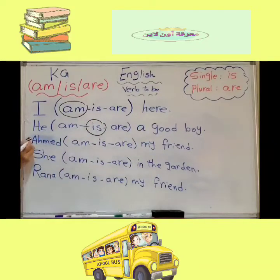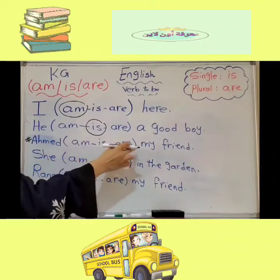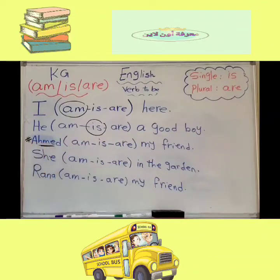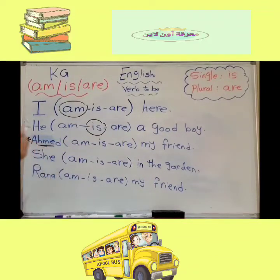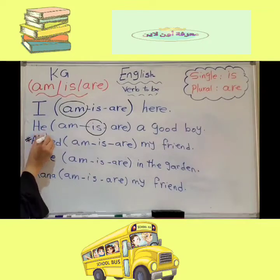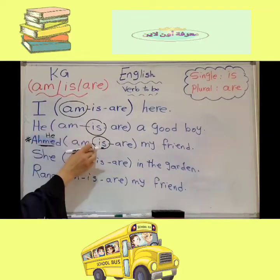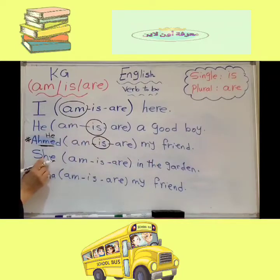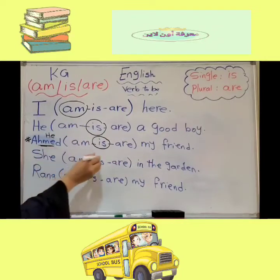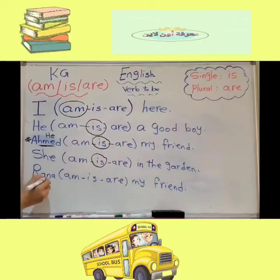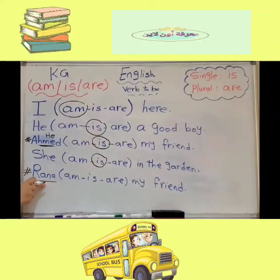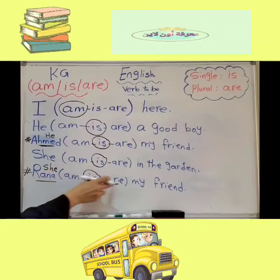Let's see this important question. Ahmed — am, is, or are — my friend? Ahmed refers to he, so we take is: Ahmed is my friend. She takes is — she is in the garden. Rana refers to she, so we take is: Rana is my friend.